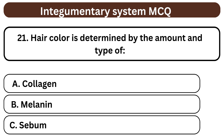Question 21. Hair color is determined by the amount and type of A. Collagen. B. Melanin. C. Sebum. The answer is B. Melanin.